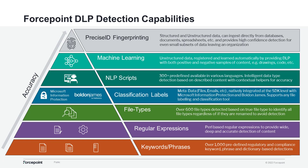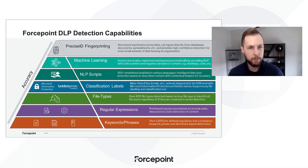Another integration that we have is through any third-party labeling or classification solution that we can also apply our DLP policies to. Whether that's inline or at Discovery, we can integrate with popular vendors such as Microsoft Information Protection or Bolden James through Help Systems, or any other third party you may want to bring to Forcepoint DLP, and we're simply doing that by looking at the header information.